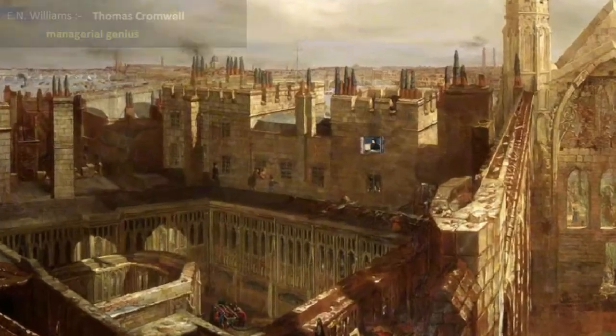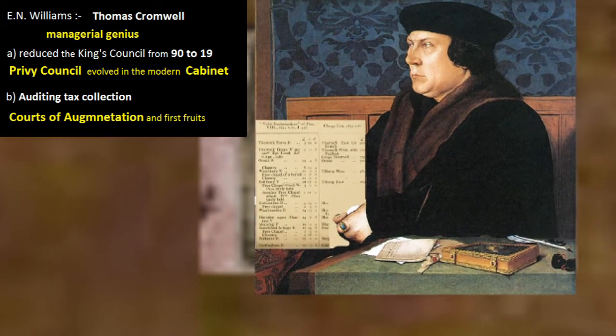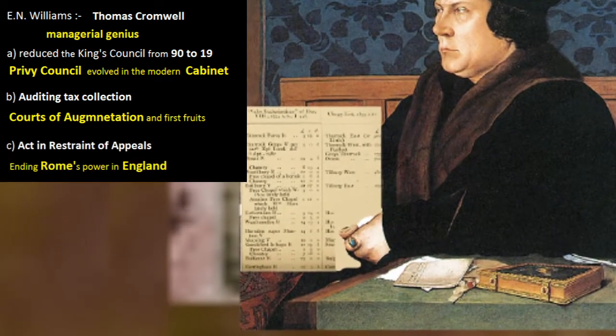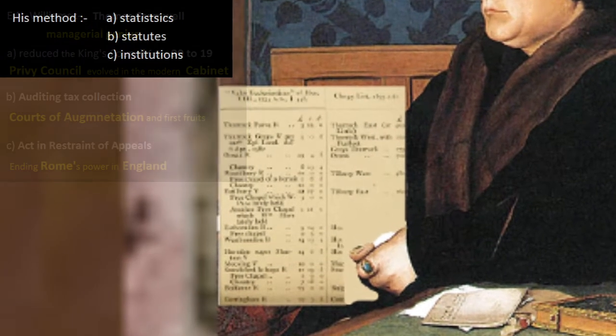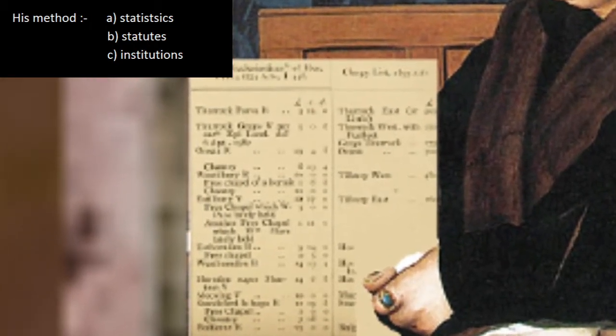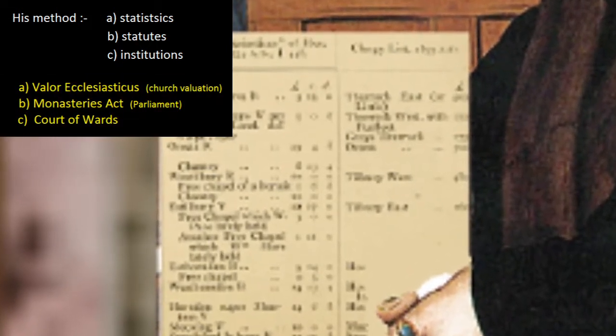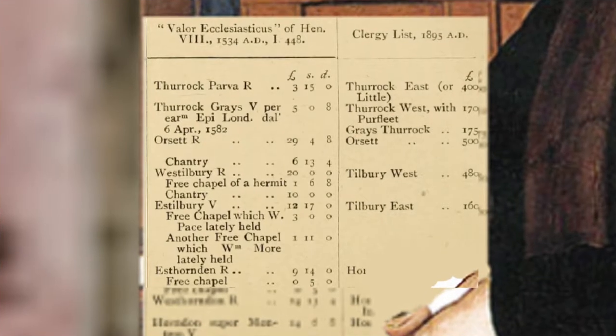Thomas Cromwell transformed England from a medieval state to a modern one. He reduced the King's Council from 90 to 19, forming a Privy Council which became the modern cabinet, auditing tax collection through the courts of augmentation and ending Rome's power in England. His method was statistics, statutes and institutions. During Cromwell's eight years, Parliament sat more frequently and passed 333 statutes.